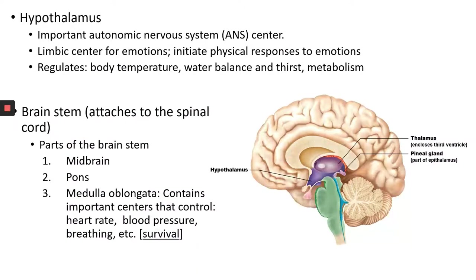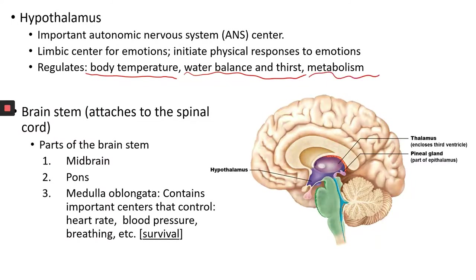The hypothalamus is a very important part of the autonomic nervous system. It regulates a lot of things without you consciously controlling them — for example, body temperature. When you have an infection, the hypothalamus, which is the thermostat of your body, will reset your body temperature to a higher level, causing a fever. It also regulates water balance, thirst, and metabolic processes through hormones.